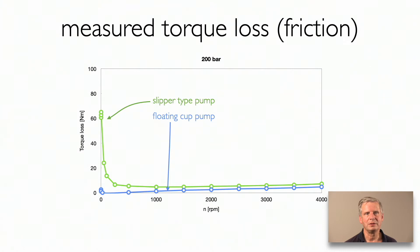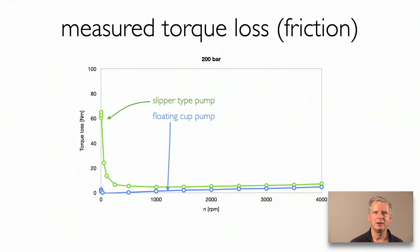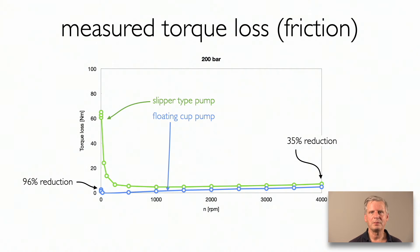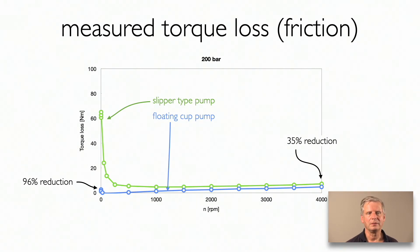This is the same measurement but now performed on one of our floating cap pumps. Both pumps have about the same displacement and are measured at the same conditions. Yet the floating cap pump reduces the friction at high speeds by about 35 percent. But the most remarkable difference is the disappearance of the high friction forces and losses at low speeds.